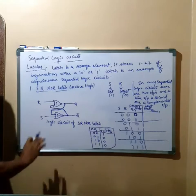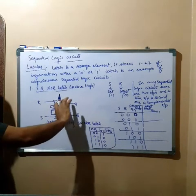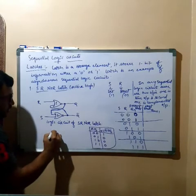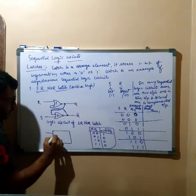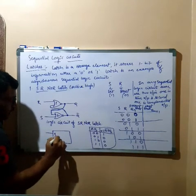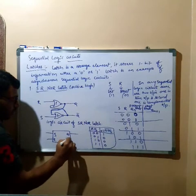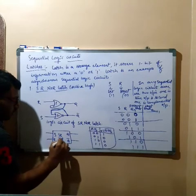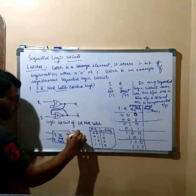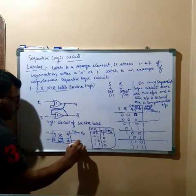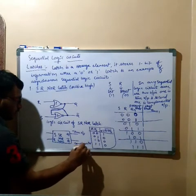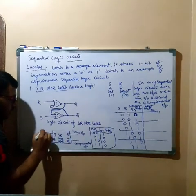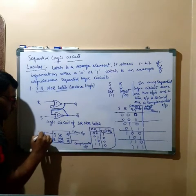Now we know the function of the NOR gate. I have applied input S here and R here — this is a simple SR NOR Latch. The block diagram representation has two inputs S and R, and two outputs Q and Q-complement. This is the block diagram representation; this is the circuit representation.